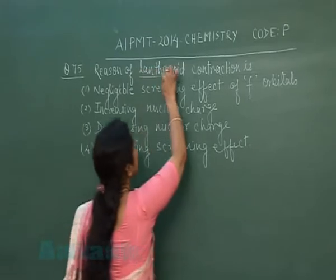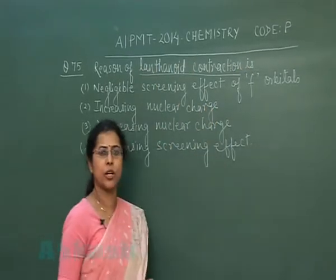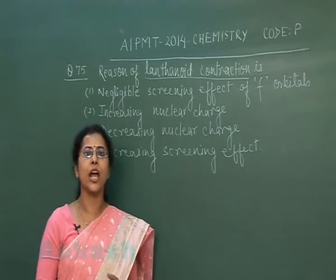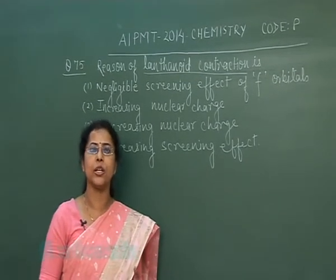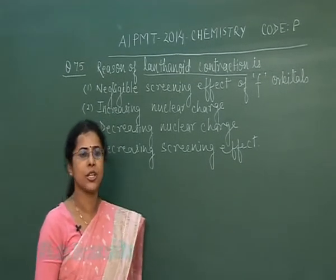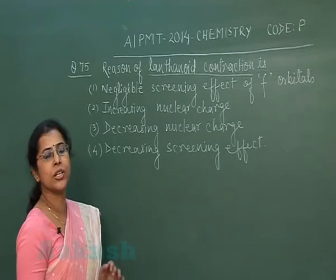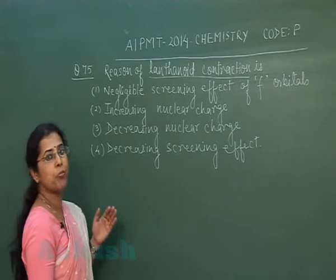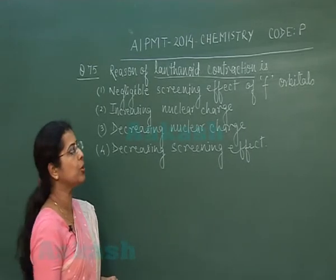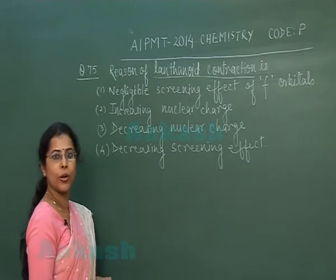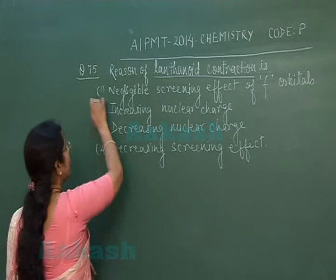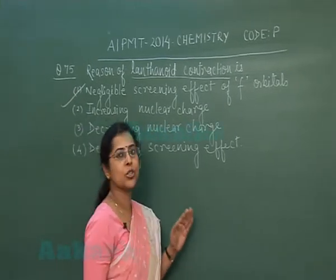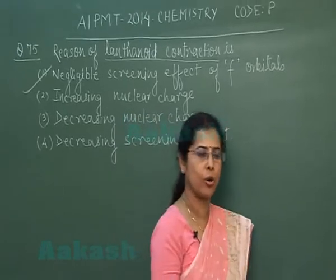Lanthanide contraction means gradual decrease of radii of lanthanoids in a series. That gradual decrease in size of lanthanoids is due to imperfect shielding of the nucleus by F orbitals. So the correct option is the first one: negligible screening effect of F orbitals.